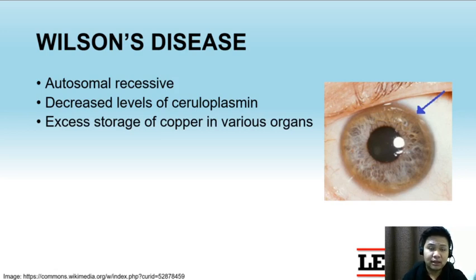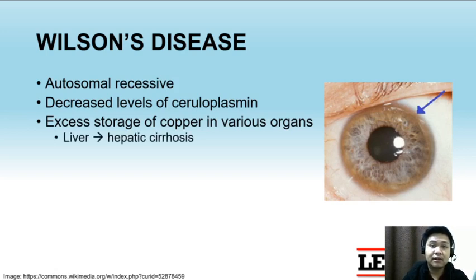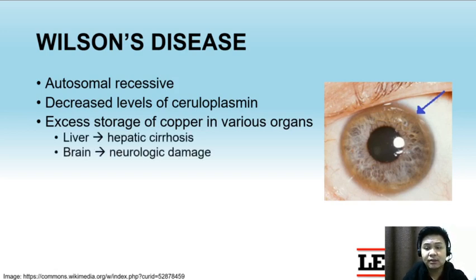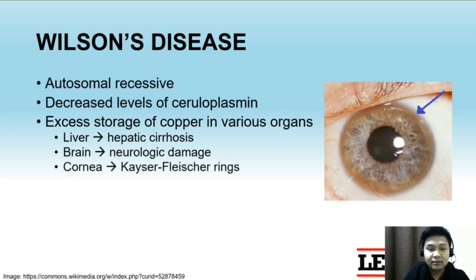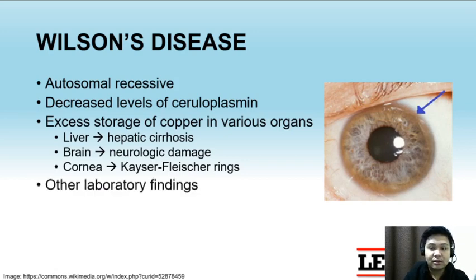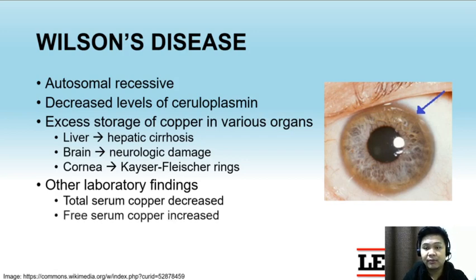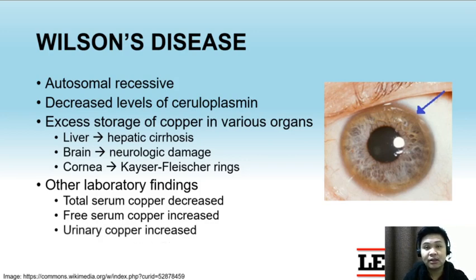When copper deposits in various organs, it may cause detrimental effects. In the liver, it can cause hepatic cirrhosis; in the brain, it can cause neurologic damage; and when it accumulates in the cornea, it can be seen as Kayser-Fleischer rings. Other laboratory findings include a decrease in total serum copper but an increase in free serum copper and an increase in urinary copper.